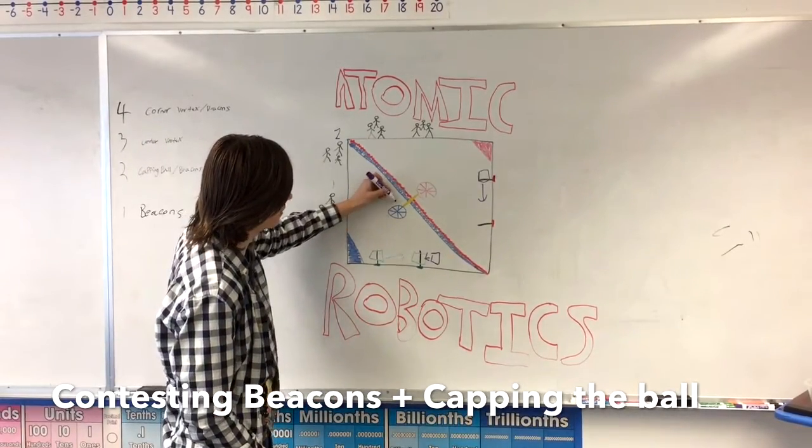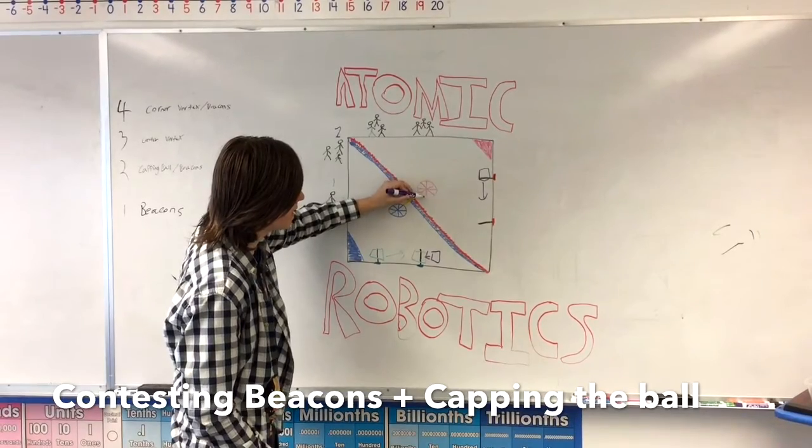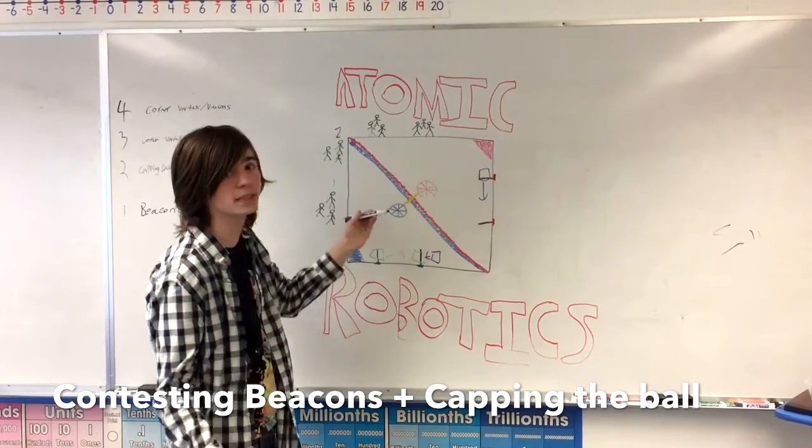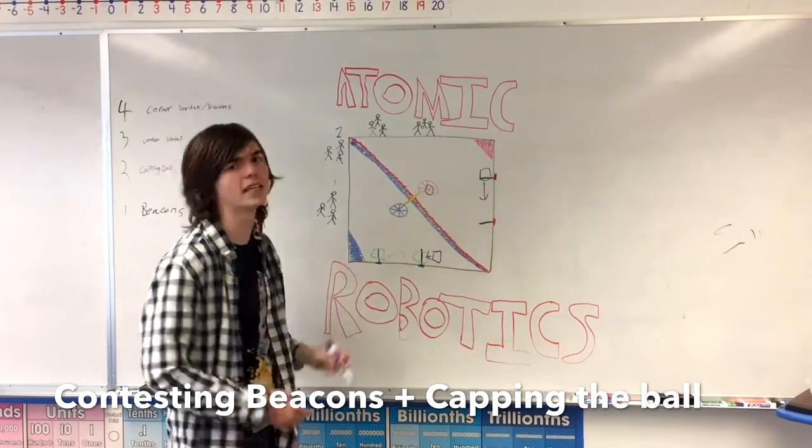Taking the cap ball from whichever side you're on - so for the red alliance, you'd grab the cap ball from wherever it is, maybe it's somewhere else from autonomous, and then lift it to the top and score it in your center vortex.